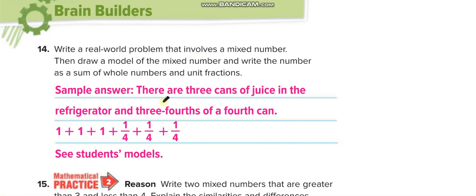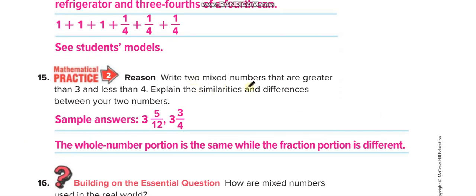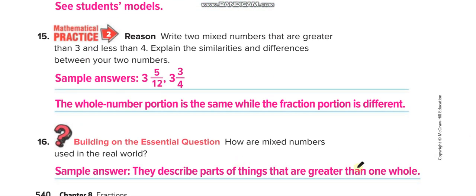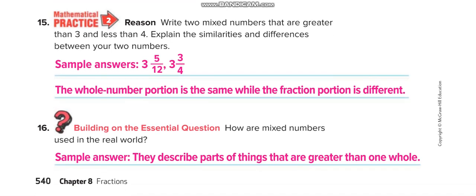There's also a real-world problem with its solution — write your answer in the comments. Write two mixed numbers that are greater than three and less than four: write three whole and any fraction, and that will be more than three but less than four. Mixed numbers are used in real life to describe parts of things greater than one whole. I hope you understand the lesson — please like this video and subscribe to Learn Math with Mr. Saad. Thank you and have a nice day!